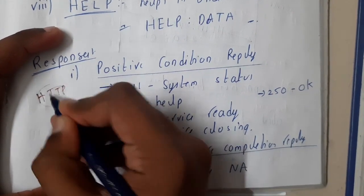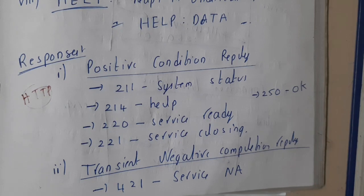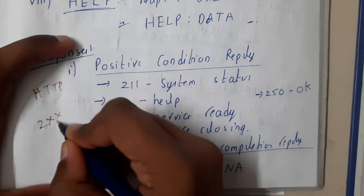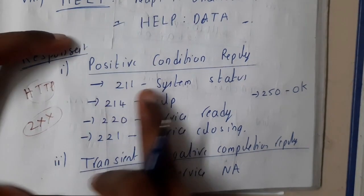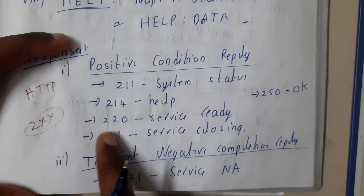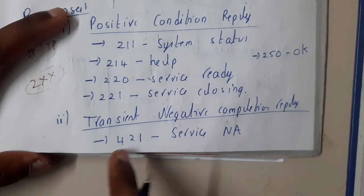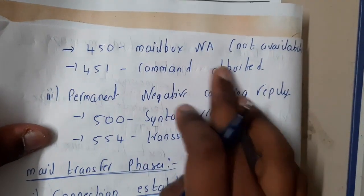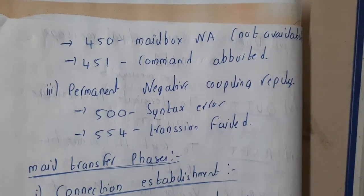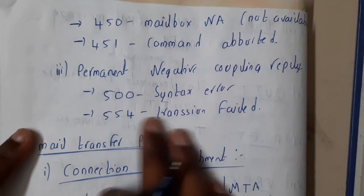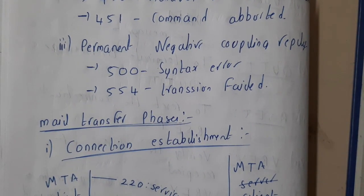Now let's go through SMTP responses. Responses in the 2xx range are positive: 211 is system status, 214 is help, 220 is service ready, 221 is service closing, and 250 is OK. Negative/transitional replies include 421 for service not available and 450 for mail not available, 451 for command aborted. The 5xx series indicates errors: 500 is a syntax error and 554 is transmission failed.